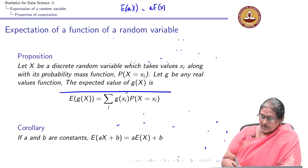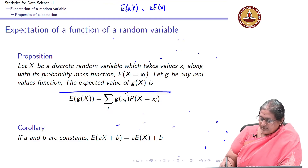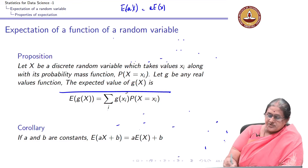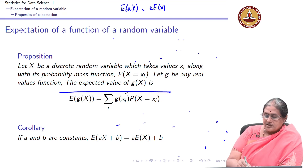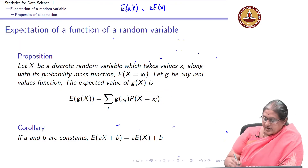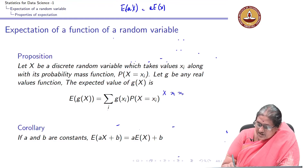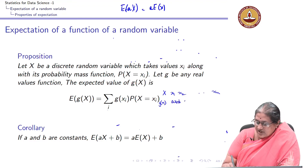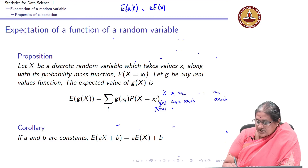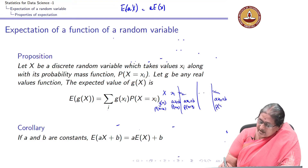Similarly, let us look at the case where g(x) = ax + b, where a and b are constants. Let x take values x1, x2, ..., xn. Then g(x) takes values a·x1+b, a·x2+b, ..., a·xn+b with the same probabilities P(x=x1), P(x=x2), ..., P(x=xn).